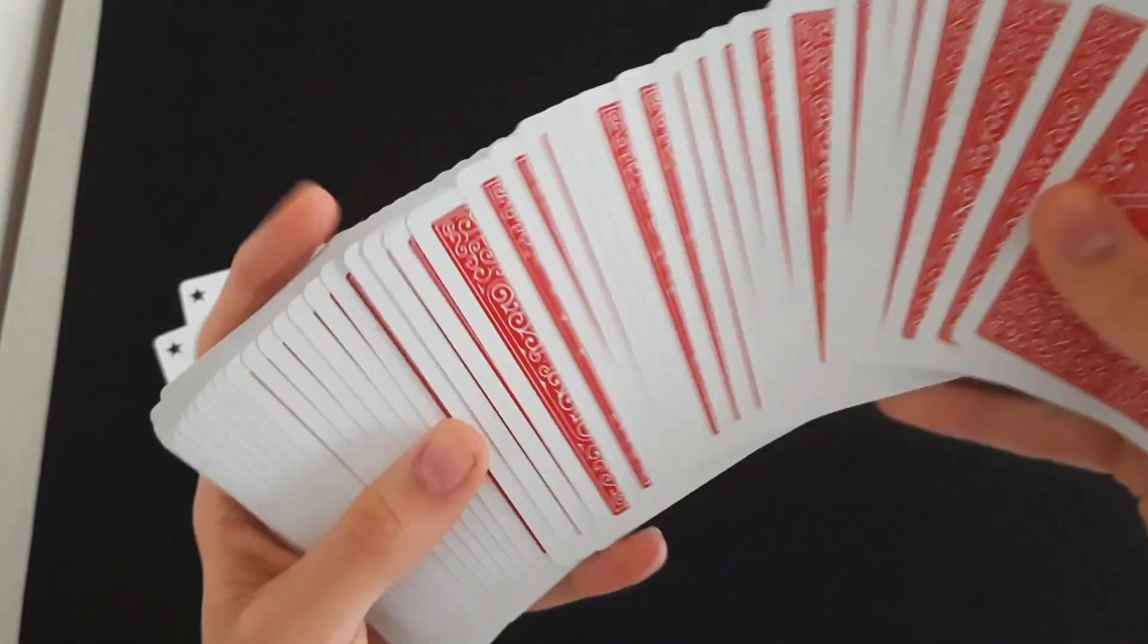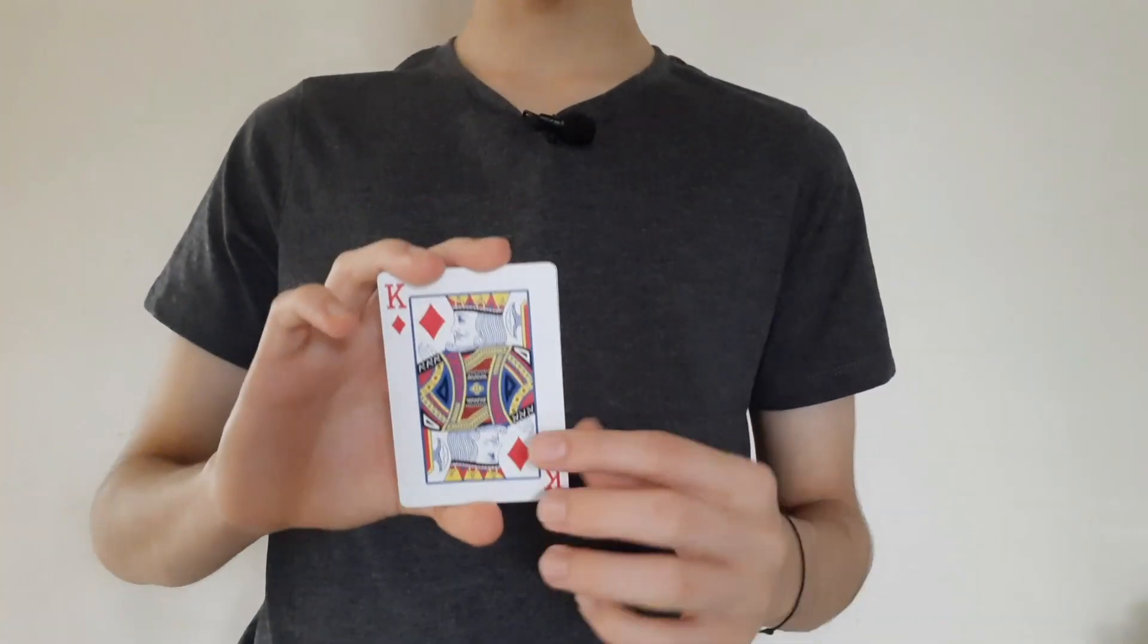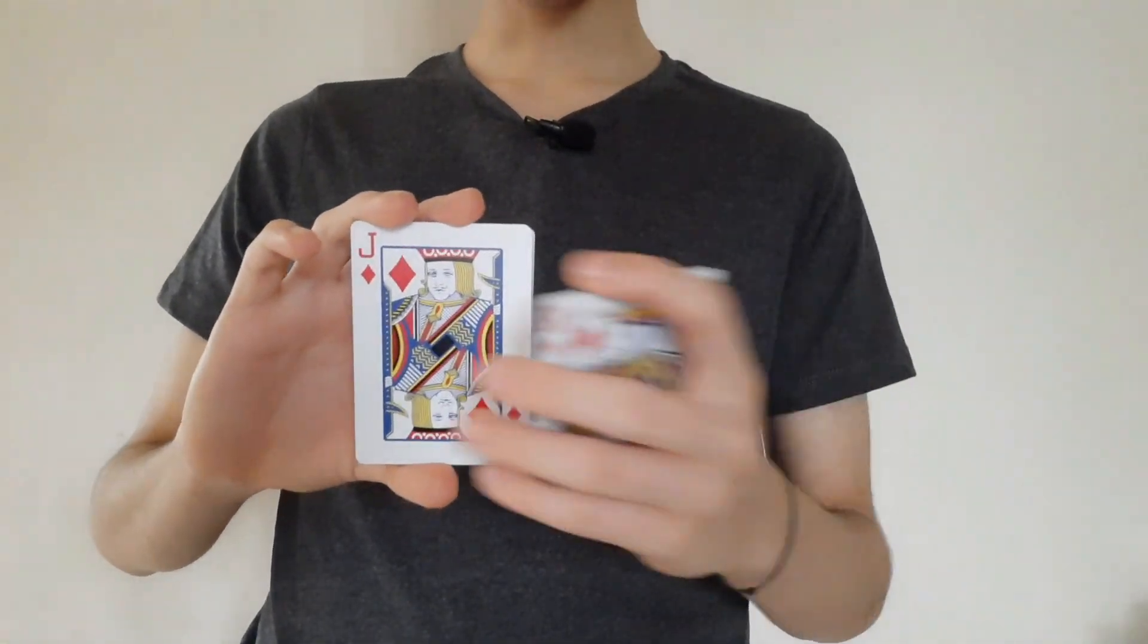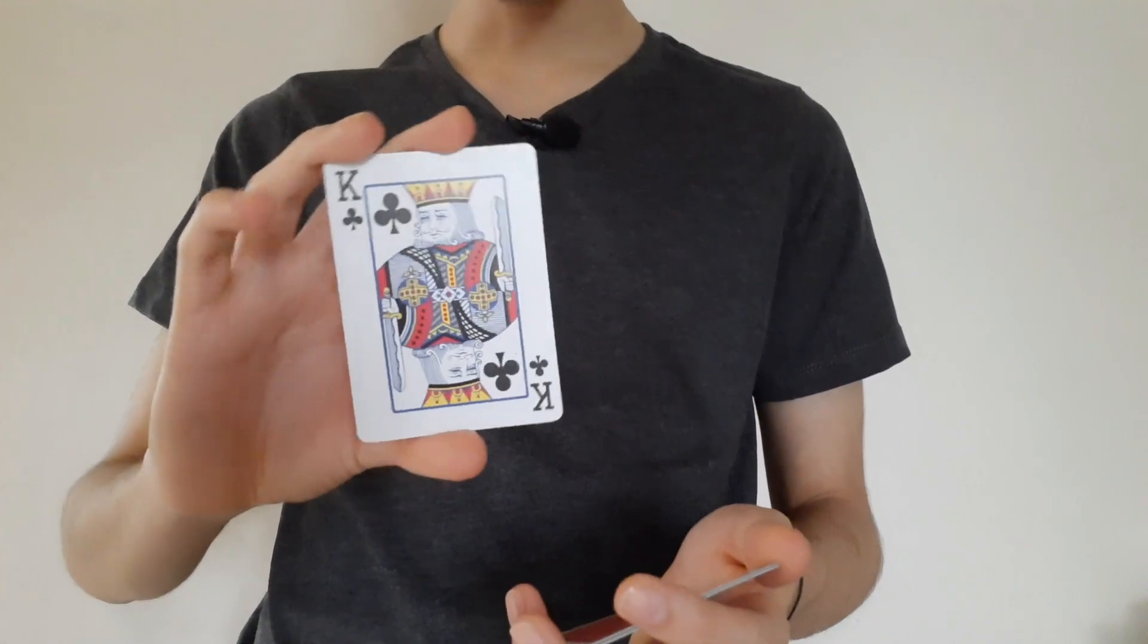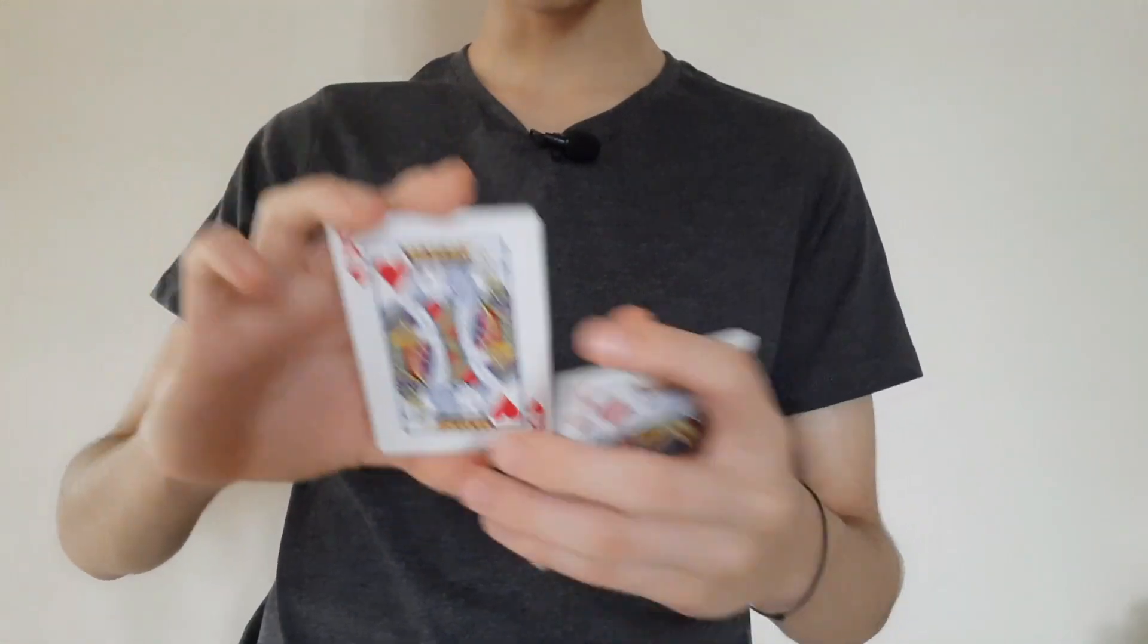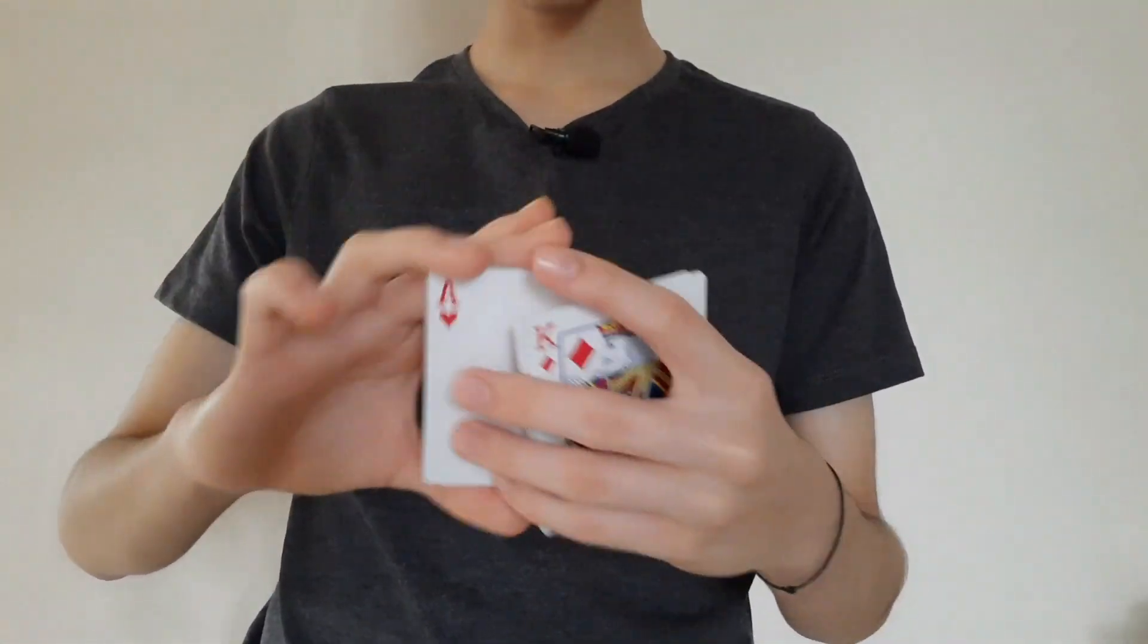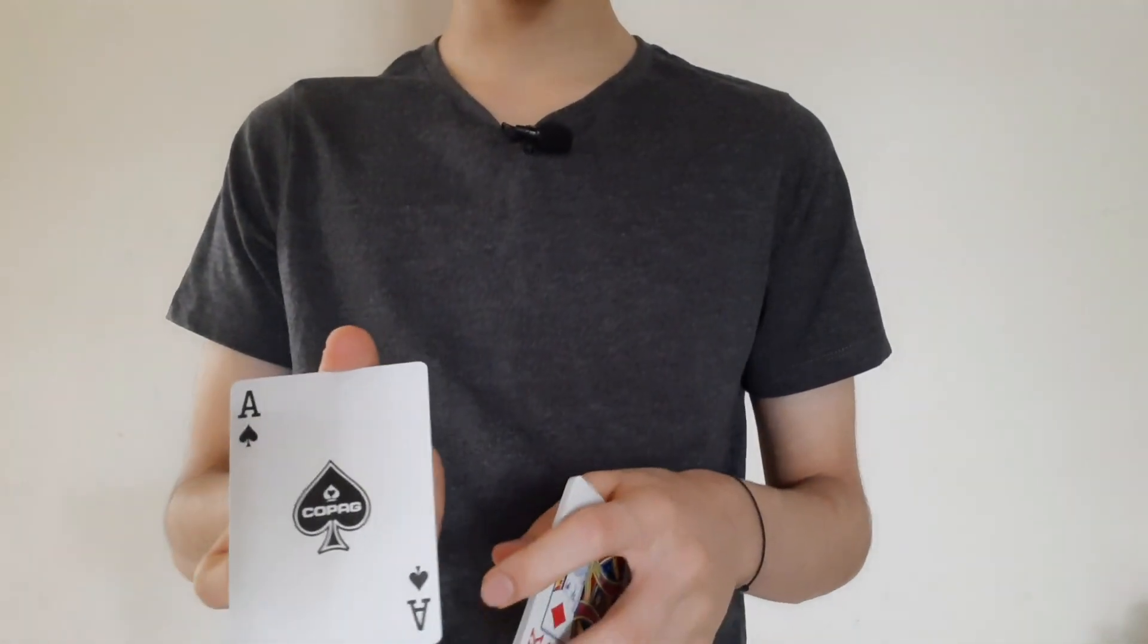This is what the face cards look like. Here are all the diamonds, and they are a little bit different from the standard faces that you get. Here are the clubs, here are the hearts. This is what the spades look like, and that's the ace of spades.